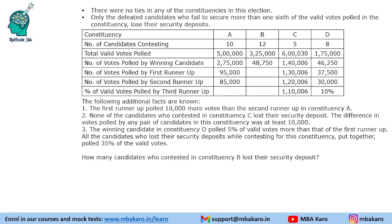Question 2: How many candidates who contested in constituency B lost their security deposit? Calculating the values, 32 multiplied by 15 is 480. So observing the data, the winner itself is getting 15% of the votes. The condition states only defeated candidates can lose their security deposit — the winning candidate cannot lose it. Therefore, 11 candidates will lose their security deposit, since all remaining candidates get less than one-sixth of the votes.